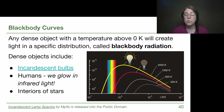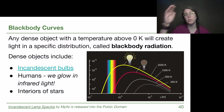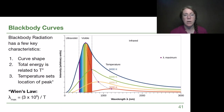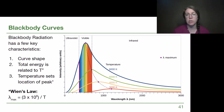It's really important to recognize that when we talk about dense objects, we're talking about the cores of stars. The cores of stars will produce this smooth curve that we're seeing, and it will change based on the temperature of the star itself. That's one of the key characteristics of blackbody radiation.